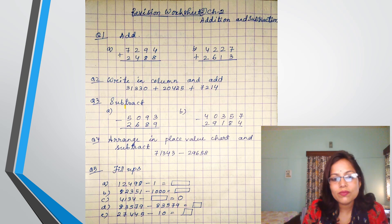And the fifth one is fillups. 12,498 minus 1. I have told you, when you are subtracting 1, you have to subtract 1 from the 1s place. And here, 82,351 minus 1,000. Without doing the workout, you have to write the answer of these fillups. When you are subtracting 1,000, you have to subtract 1 from the 1,000s place.